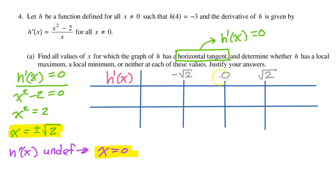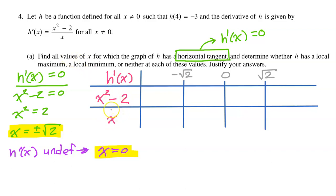Here are my critical values in order on the number line. Make sure you have the sign chart labeled as pertaining to h prime. We need a row for each factor in this quotient — a row for the numerator x squared minus 2, and a row for the denominator. We need to determine if these factors are positive or negative in each interval.